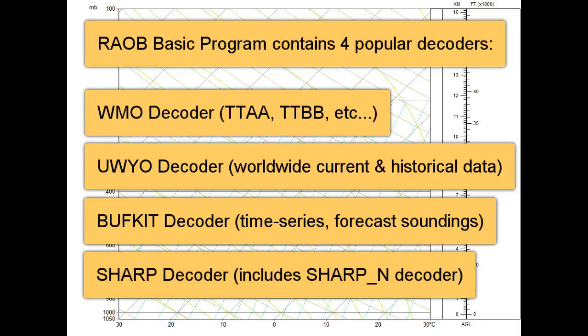And fourth is the SHARP decoder, for soundings produced in the older FAA-604 format. RAOB also decodes the SHARP-N format.